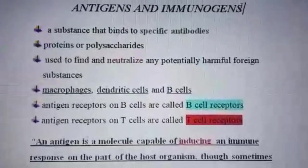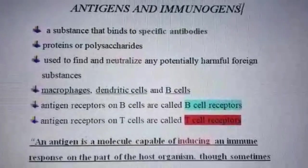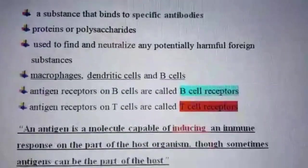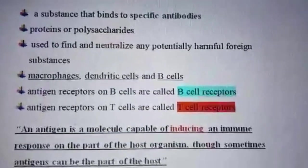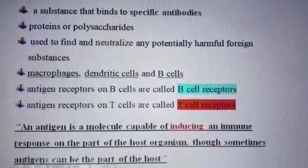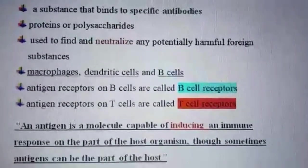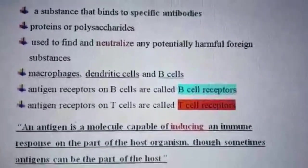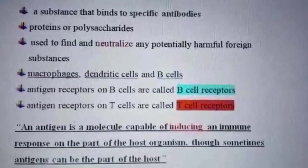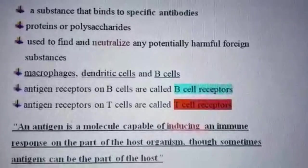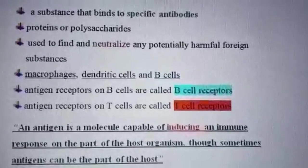Macrophages, dendritic cells, and B cells recognize these antigens. The receptors of the antigens that are present on the surface of B cells are called B cell receptors, whereas the antigen receptors present on the surface of T cells are called T cell receptors.